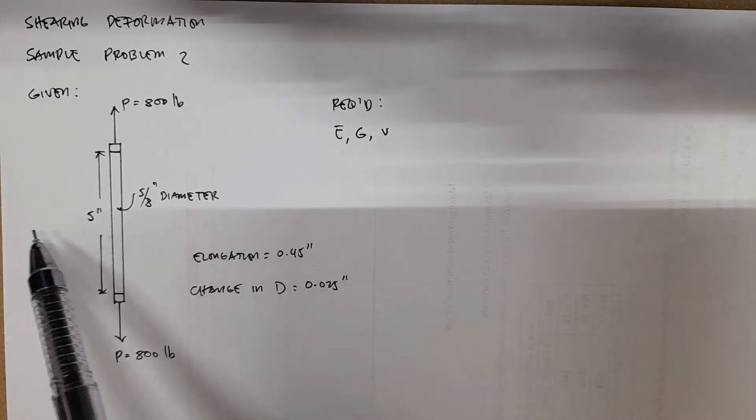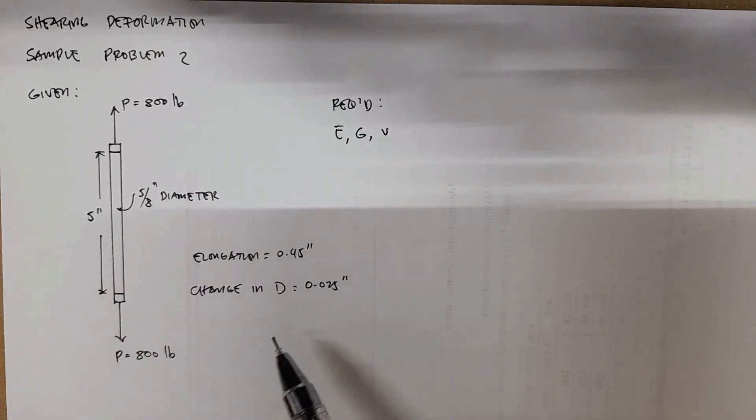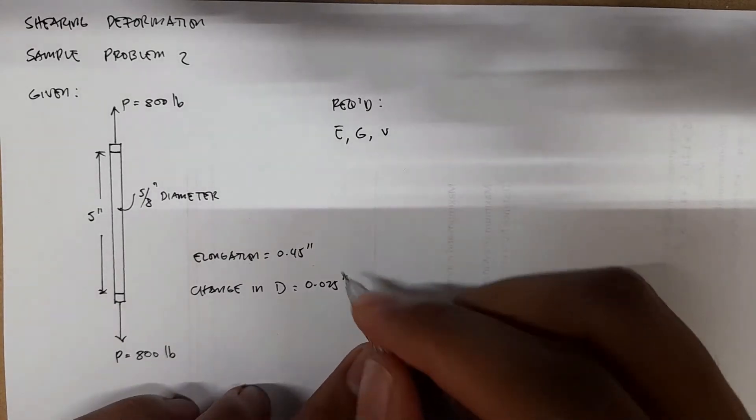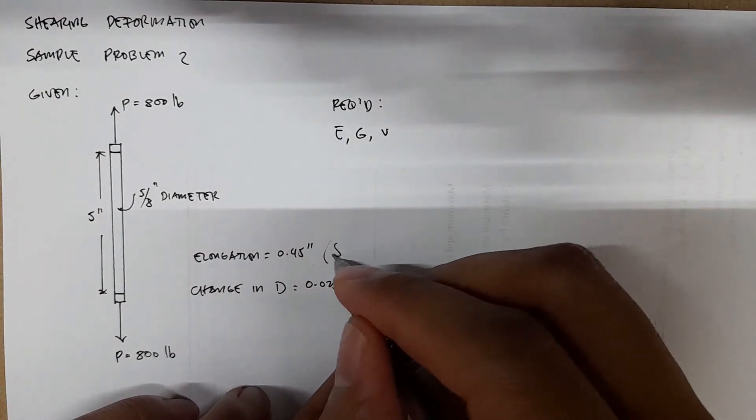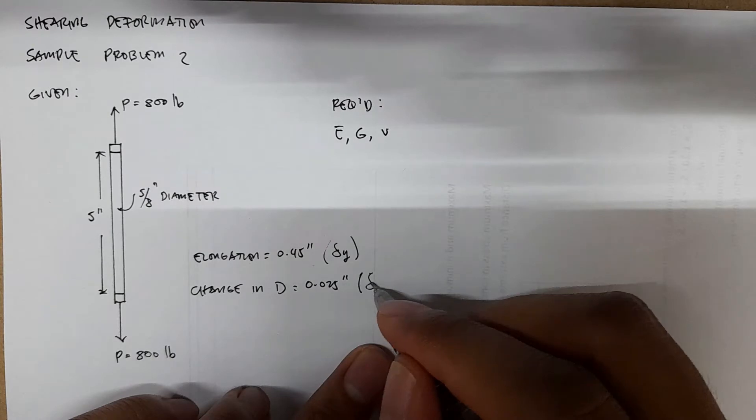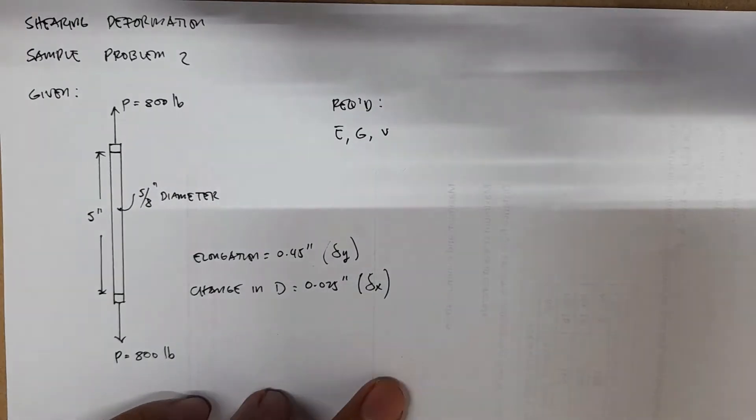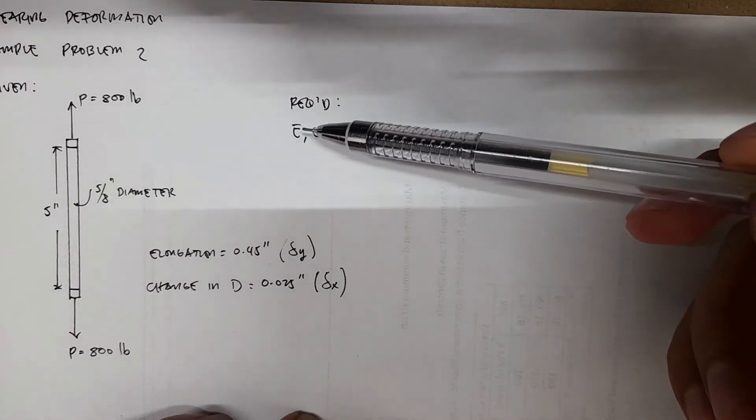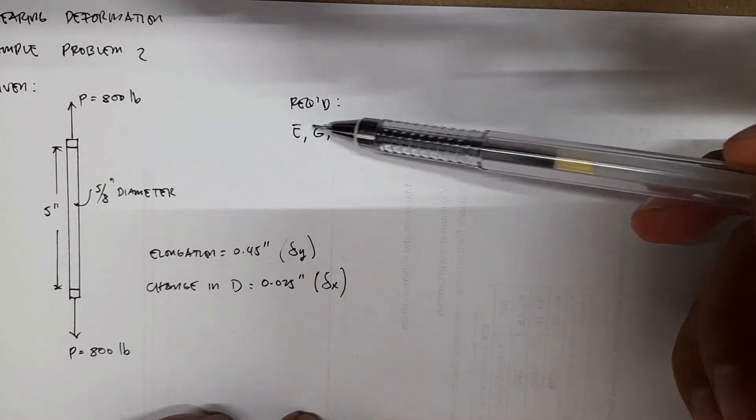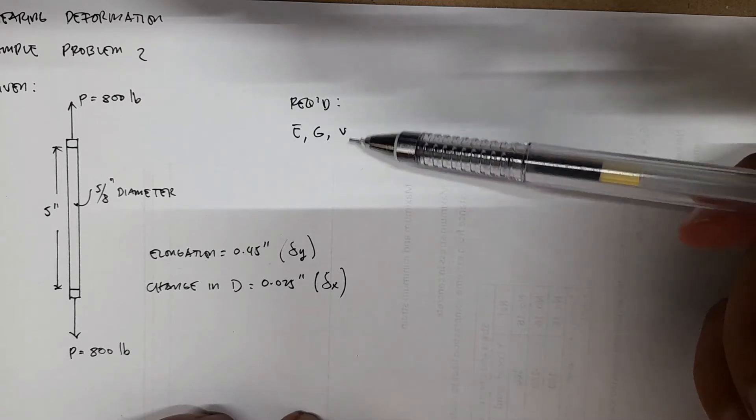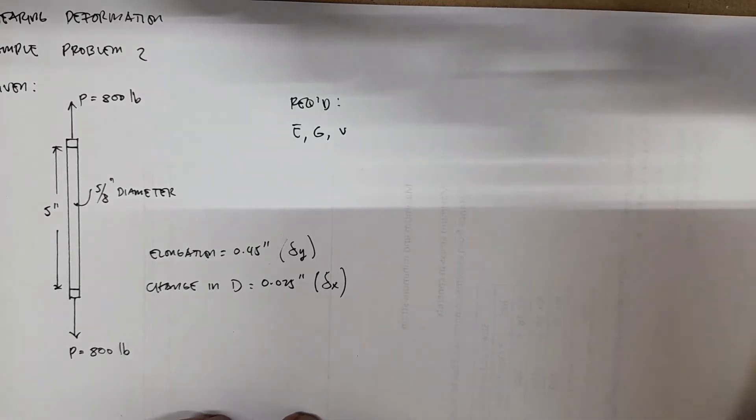This elongation is in the y direction so we can have this as deformation y, and the change in diameter is in the x direction, so deformation x. We are required to solve for the modulus of elasticity E, the modulus of rigidity G, and the Poisson's ratio v.